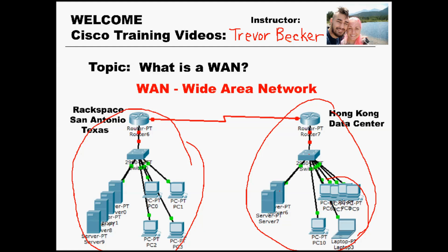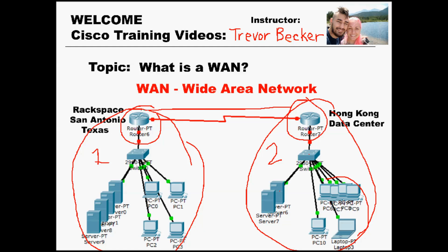So the purpose of the WAN is to connect LAN number one to LAN number two. Notice that these LANs are on opposite sides of the world. So this WAN is going to connect them, even though they're thousands of miles apart. It's going to take LAN one's router and connect it to LAN two's router using a WAN link.